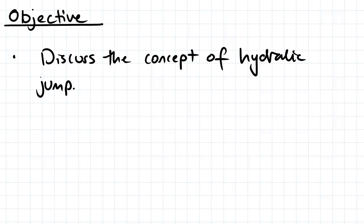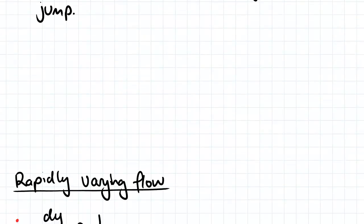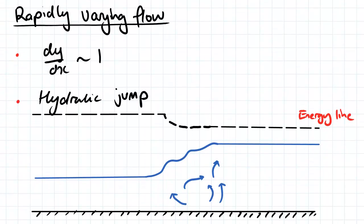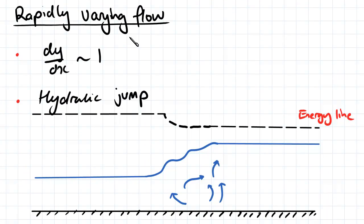Hey guys, the objective for this video is to discuss the concept of hydraulic jump. So hydraulic jump occurs for rapidly varying flow and that is we have a dy/dx which is approximately equal to one or greater.